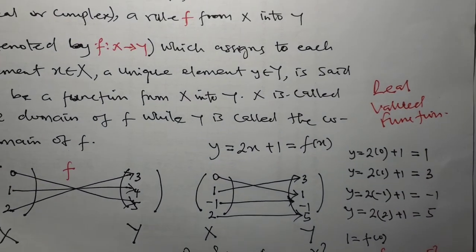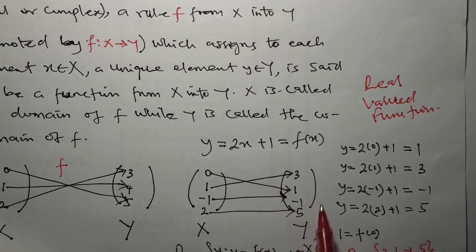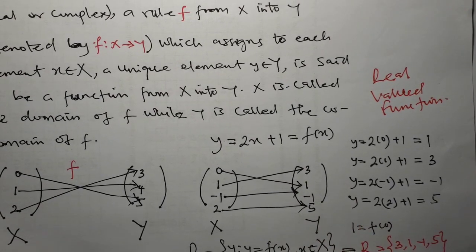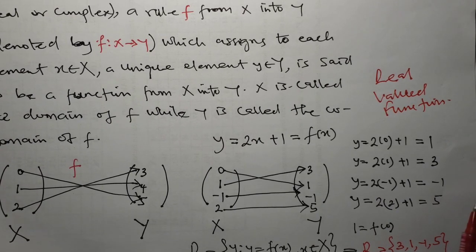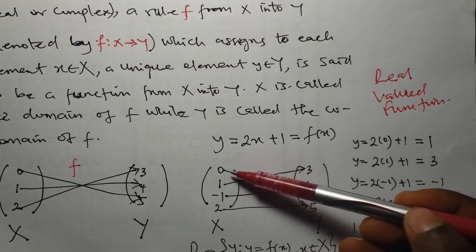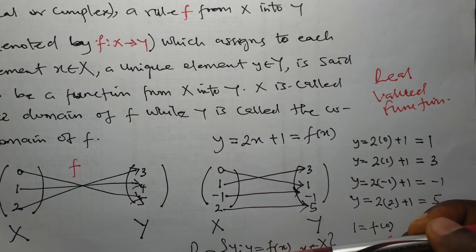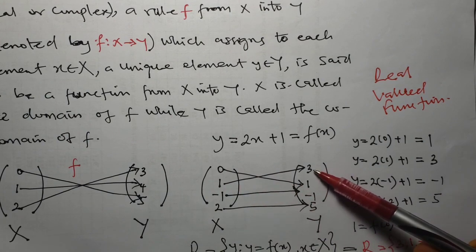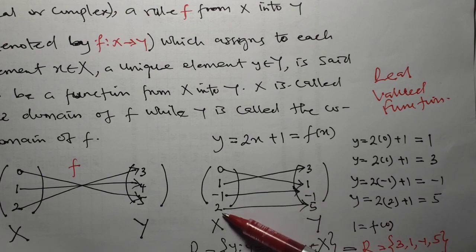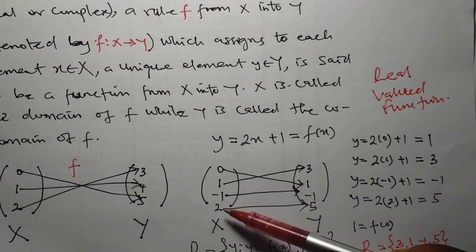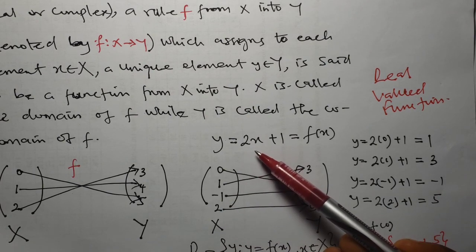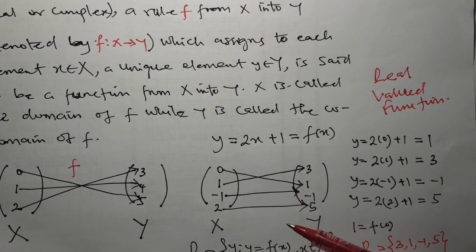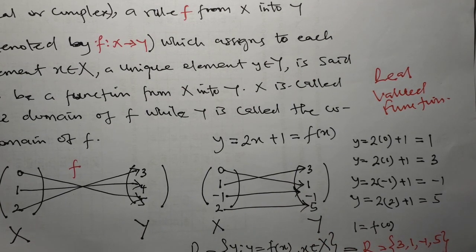In our next lecture, we shall try to find out how many elements should be in the domain of a function. We have plugged in 0, 1, -1, and 2 into this function and got images. The question is: how many more real numbers can be plugged into this function such that we shall have images? When we try to answer this question, what we'll be doing is called finding the domain of a function. See you in the next class.